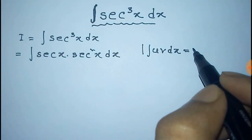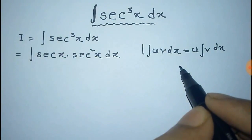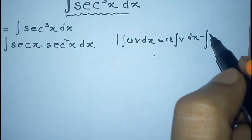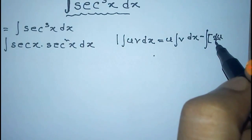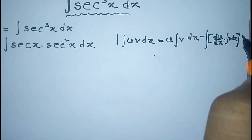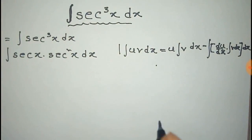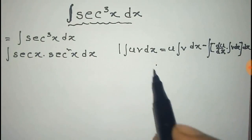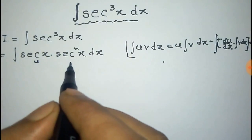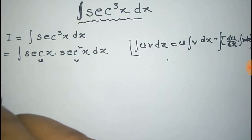Here we use the formula of integration of UV, that is equal to u times integration of v dx, minus the total integration of derivative of u into integration of v into dx. This is the formula of integration of UV. Now we apply this formula on our integration. We take sec x as u and sec square x as v.